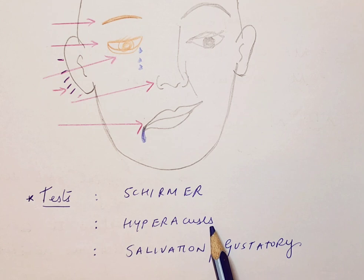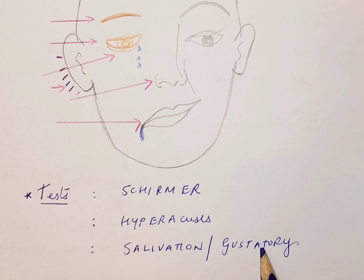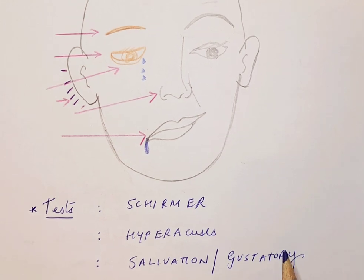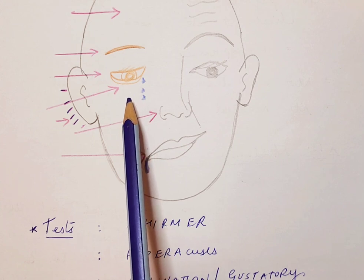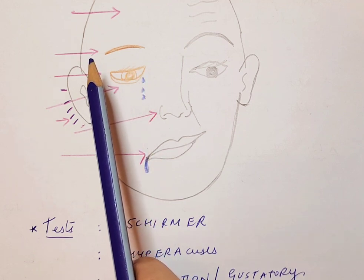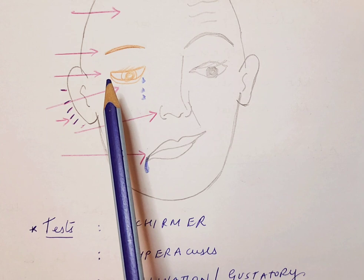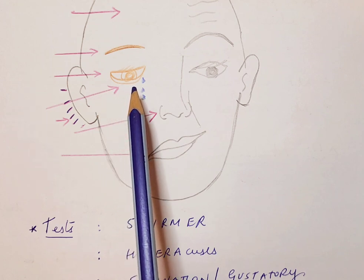The Schirmer test assesses decreased lacrimation on the affected side. When the greater petrosal nerve is affected, lacrimation reduces, though reflex epiphora due to corneal irritation may also occur. Hyperacusis arises because the stapedial reflex is lost with paralysis of the stapedius muscle, causing an abnormal response to loud noises. The chorda tympani involvement affects parasympathetic salivation and special gustatory sensations. Electrophysiological studies, electrophysiological mapping, and MRI of the brain may also be required. In Bell's palsy, Bell's phenomenon is observed — on attempting to close the eye, there is an upward and outward rotation of the cornea as a protective reflex.